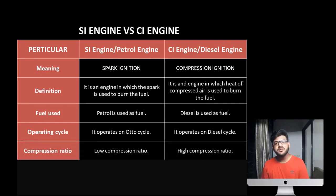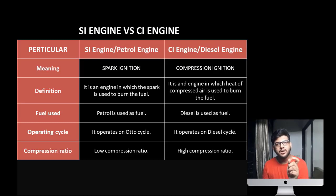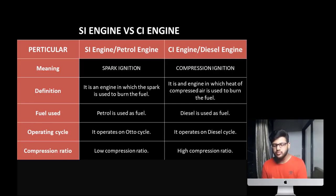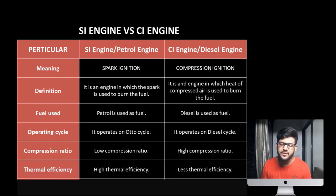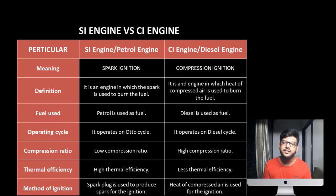Next is compression ratio — it is the ratio of volume before and after compression inside the cylinder. In SI engine we use a lower compression ratio, approximately 8:1 to 12:1. In CI engine we use a higher compression ratio, approximately 15:1 to 22:1. For exam purposes, you only need to write low compression ratio for SI and high compression ratio for CI. Next is thermal efficiency. Thermal efficiency of petrol engine is higher, and thermal efficiency of diesel engine is lower than petrol engine.